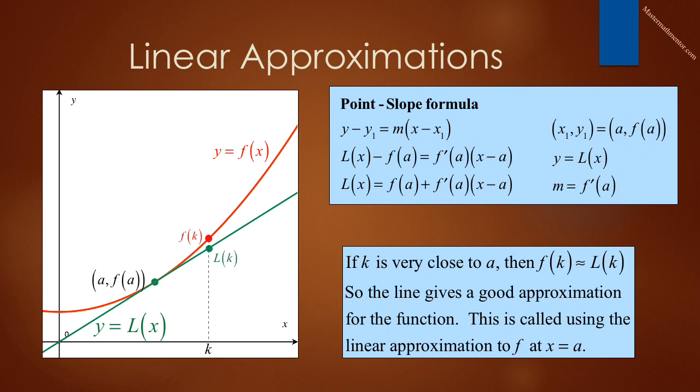Look at the graph again. We now have this value of k, which is fairly close to a. We would like to find the value of f of k, the red dot. But it may be difficult to find this value. f might be a complicated looking expression. However, if we use the line, which is always an easy looking expression, we can find the value of the line at x is equal to k. And realize that it will be very close to the value of f of k. That is linear approximation.